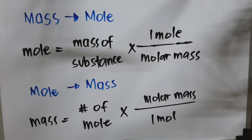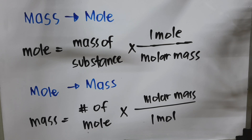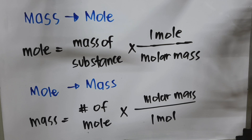Now that you have an idea about Avogadro's number, the mole concept, and the computation of molar mass, we are going to discuss the conversion of mass to mole and mole to mass. This conversion is very important for our next topic, which is stoichiometry. In converting mass to mole, the formula is: moles equals mass of the substance multiplied by 1 mole divided by the molar mass. In converting mole to mass, mass equals the number of moles multiplied by the molar mass divided by 1 mole.